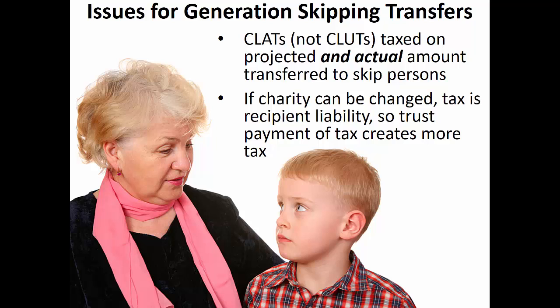Worse, if a charitable lead annuity trust grows slower than the Section 7520 rate, ultimately leaving less to the skip person than projected, there is no refund of the allocated generation-skipping transfer tax exemption. In contrast, the ultimate amount of the transfer is irrelevant to the calculation of generation-skipping transfer tax for a charitable lead unitrust. However, the charitable lead unitrust is not an ideal mechanism for transferring growth above the Section 7520 rate because such growth must be shared with the charity. A charitable lead unitrust pays a fixed percentage of trust assets to the charity each year, so more rapid growth results in higher payments to charity. As discussed previously, the donor may not retain the right to change the charitable beneficiary of a charitable lead trust; otherwise, the assets will still be included and taxed in the donor's estate. However, allowing another person, such as a family member, to have this right to change charities does not create estate tax problems for the donor.